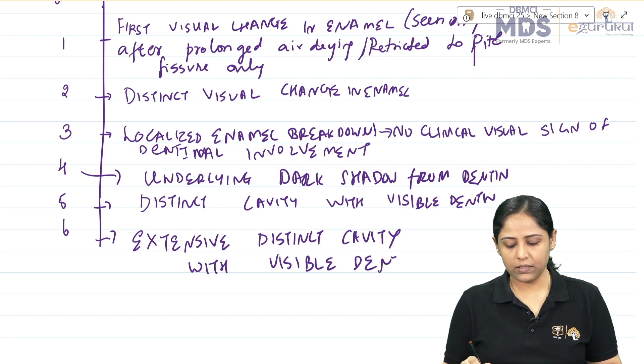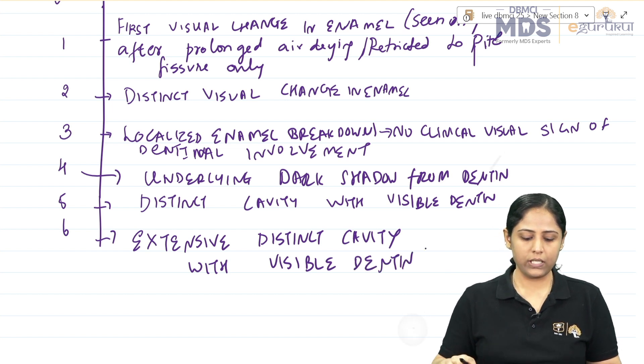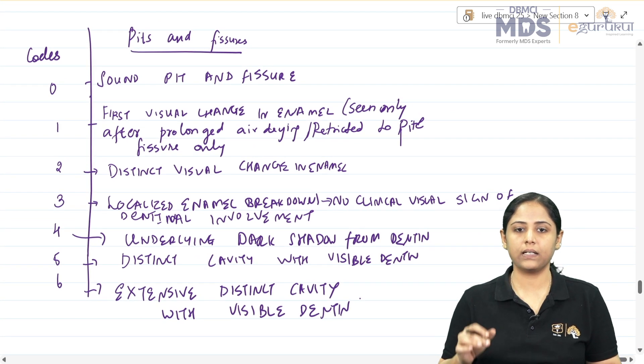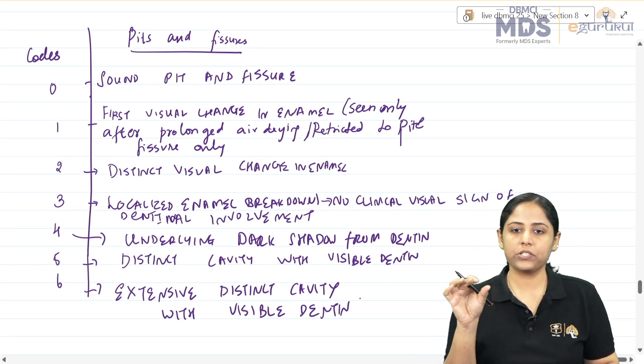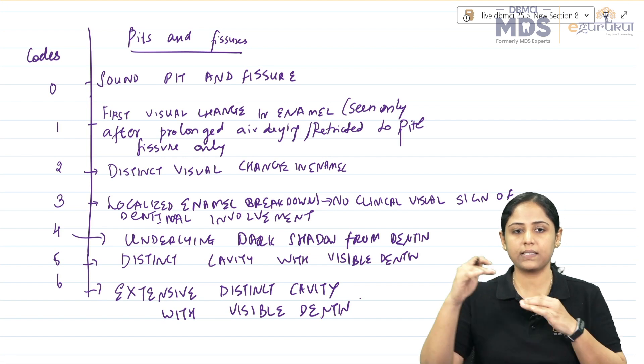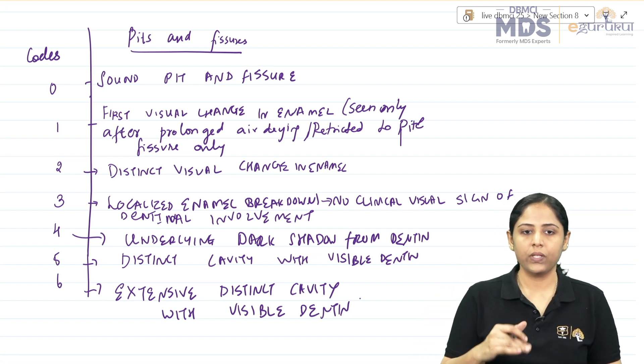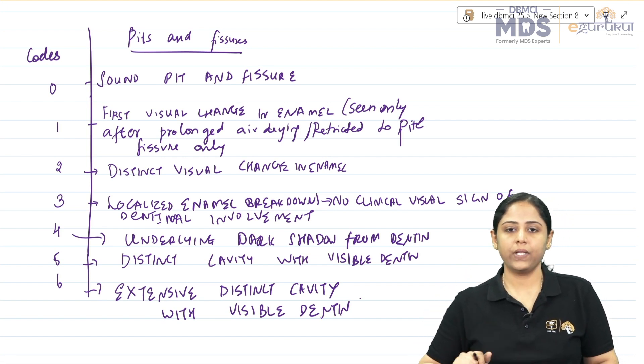These are the scores from 0 to 6. Some questions from ICDAS regarding the stages of caries can be studied. Thank you.